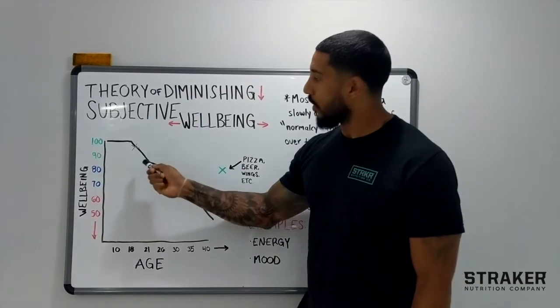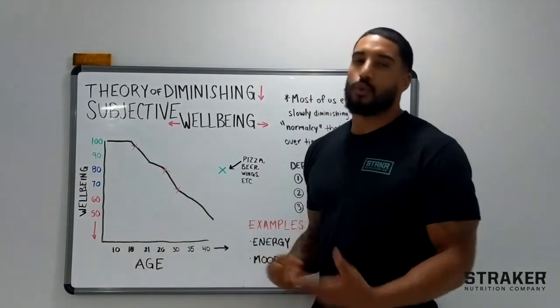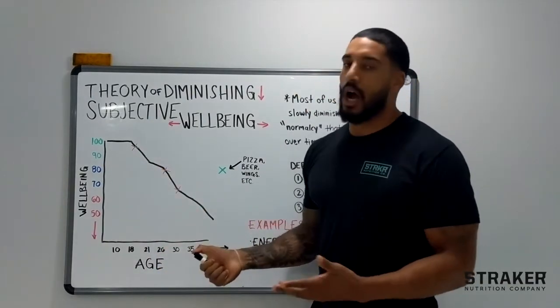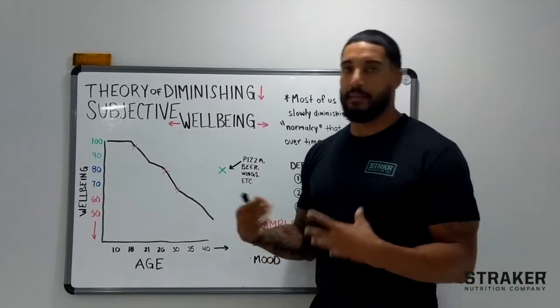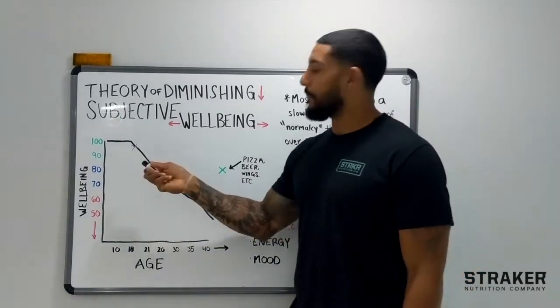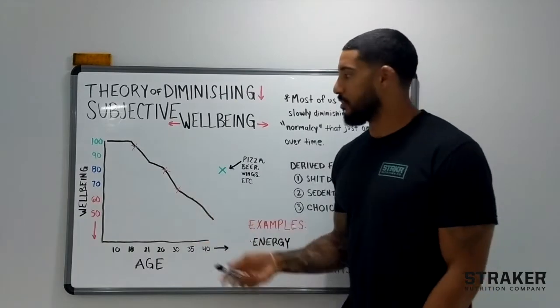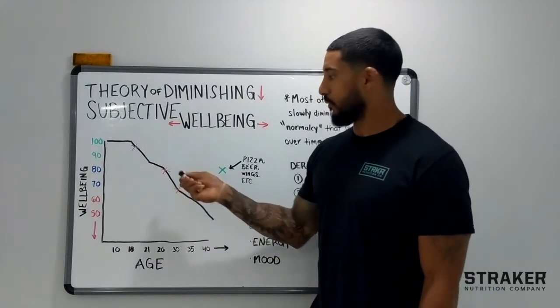And then that drop off is pretty hard until age 21, 22, where you're kind of getting out of college and you have a job and things kind of level out or taper at a less steep rate as you get some semblance of control over your life again.